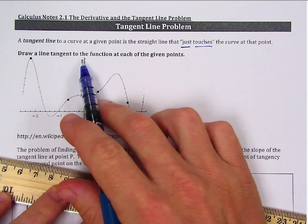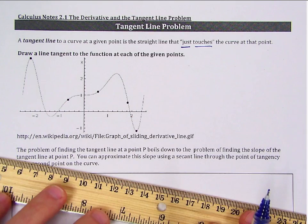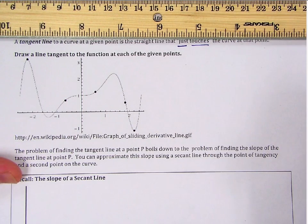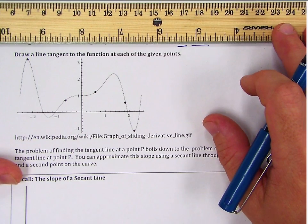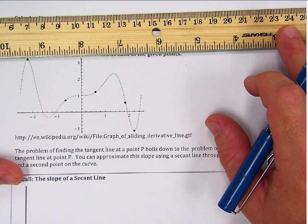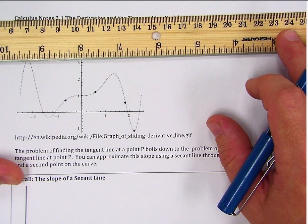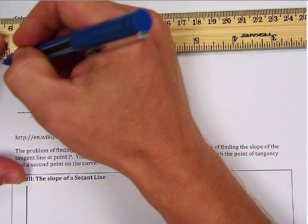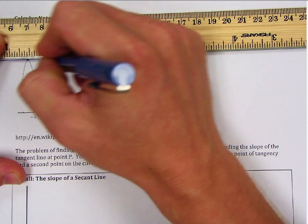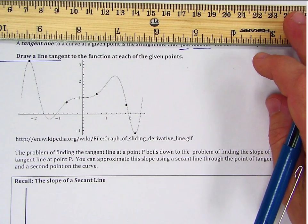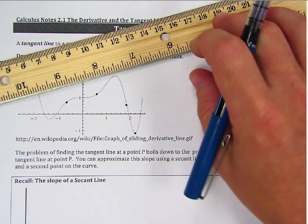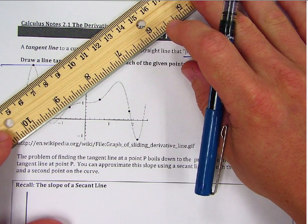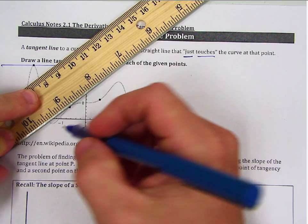We want to draw a line tangent to the function at each of the given points. We can use a ruler to help us do this — we're going to put the ruler so that it just touches the line at only that one point. If we go too far, that would be intersecting in two points, and we want it just at one point. So that would be a possible tangent line there.